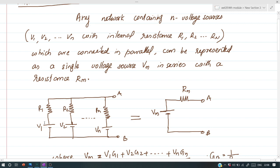Here we can see a number of voltage sources connected in parallel across terminals A and B. Each voltage source V1, V2, ... Vn has a corresponding internal impedance R1, R2, ... Rn.